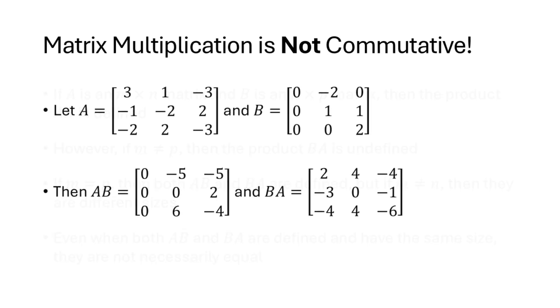Here's an example. We have a 3 by 3 matrix A and a 3 by 3 matrix B, so both AB and BA are defined and both are 3 by 3, but as you can see here, AB and BA are different.